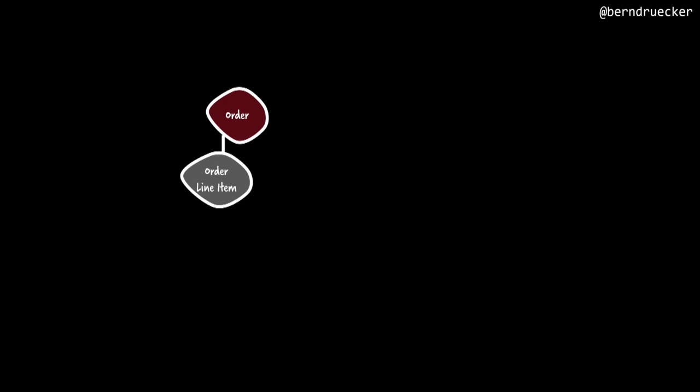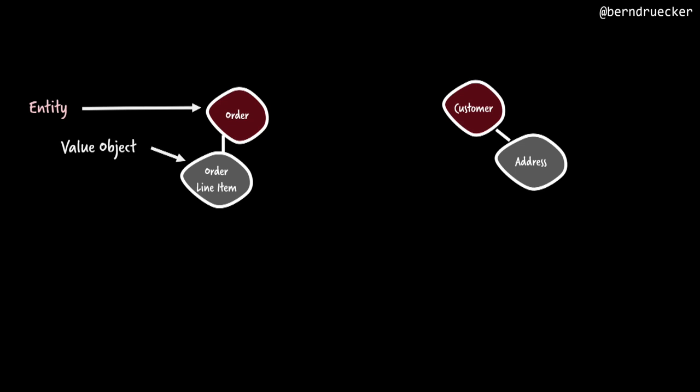If you design a domain — let's say a very simple order fulfillment system — I do a lot of order fulfillment examples because they're easy to understand. Let's assume you have an order entity, and probably the order has line items. That's the wording in domain-driven design. An order entity has an identity, so you have a clear ID. You can't ask for the order line item — that's a value object, just beside the order. You might have other entities like a customer, and that probably has other value objects like an address.